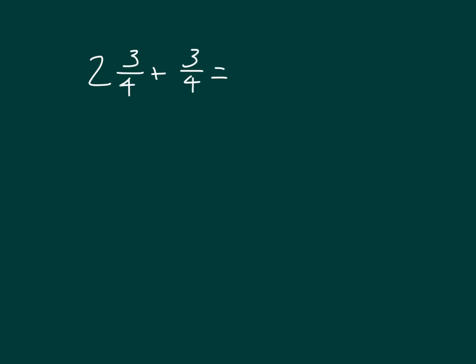Here we have another problem. 2 and 3 fourths plus 3 fourths. Let's go ahead and add those like units first. We have fourths where 3 fourths and 3 more fourths is 6 fourths. And then do not forget the 2 ones.